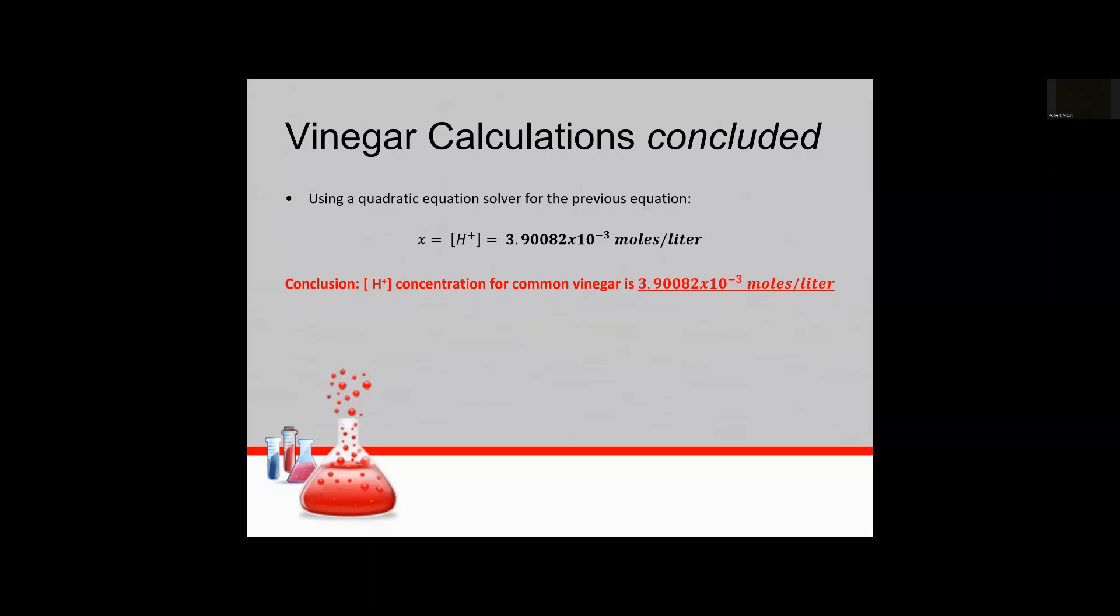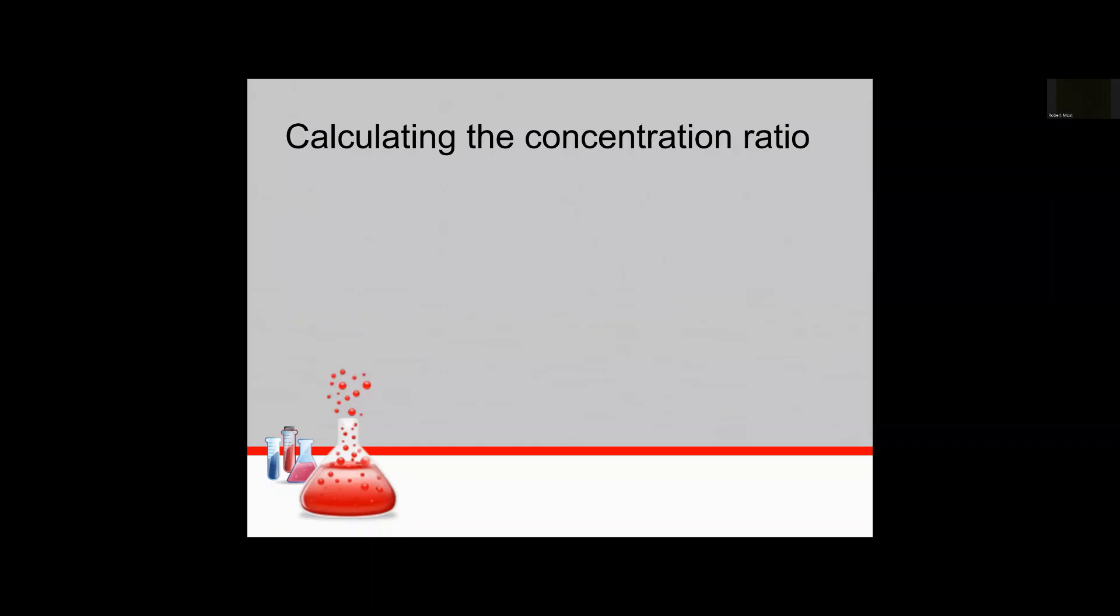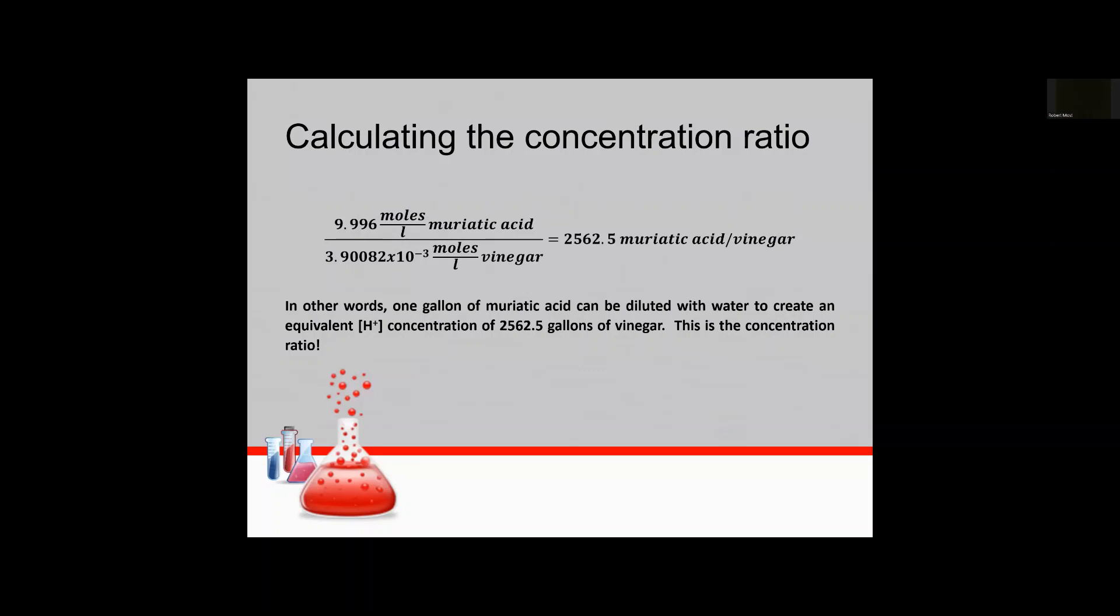So now that we have both of these concentrations we can go ahead and put together our concentration ratio okay so one with respect to the other. So in the numerator we have our muriatic acid concentration and then in the denominator what we just calculated for vinegar and so doing that ratio you see that you get 2,562.5 of muriatic acid to vinegar in terms of the hydrogen ion concentration. That's a huge number. So in other words basically what we're saying is one gallon of muriatic acid can be diluted down with 2,562 gallons of water to get the equivalent amount of concentration of vinegar. That's huge.